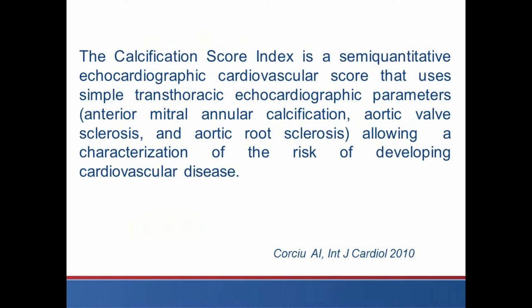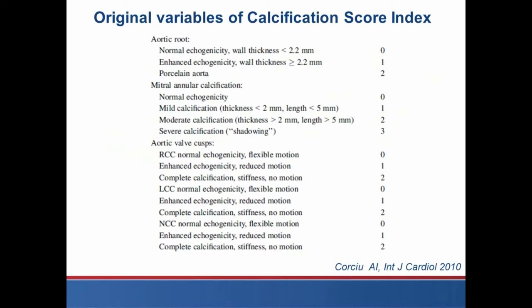The Calcification Score Index is a semi-quantitative echocardiographic cardiovascular score that uses simple transthoracic echocardiographic parameters like anterior mitral annular calcification, aortic valve sclerosis, and aortic root sclerosis, allowing a characterization of the risk of developing cardiovascular disease. The original variables of the Calcification Score Index include the aortic root, mitral annular calcification, and aortic valve cusps — the right coronary cusp, left coronary cusp, and non-coronary cusp. For each of them, three scores are identified from zero to two, depending on the level and grade of calcification.